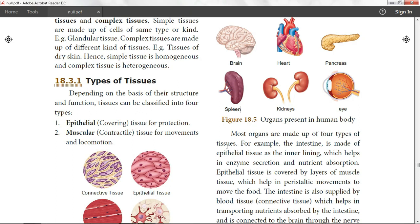The epithelial tissue helps in enzyme secretion and nutrient absorption. Epithelial tissue is covered by layers of muscle tissue which helps in peristaltic movements to move the food.